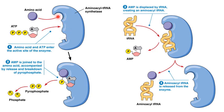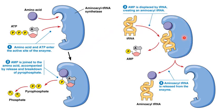In the first step — activation of the amino acid — a particular amino acid enters the enzyme site, catalyzed by a particular synthetase enzyme, and ATP enters at its site. The amino acid gets attached to AMP and two pyrophosphate groups are released. Energy released by hydrolysis of this pyrophosphate is retained in the complex between the activated amino acid and AMP. The same enzyme then catalyzes the second step, charging of the tRNA.